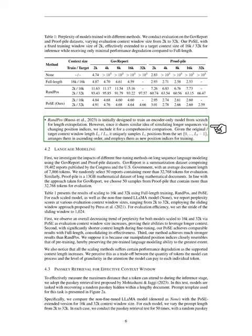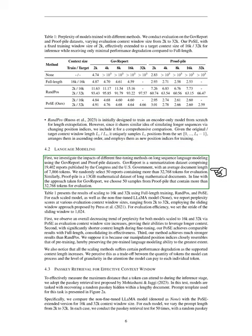In this section, we delve into the effects of various fine-tuning methods on long-sequence language modeling using two datasets: GovReport and Proof. The GovReport dataset is a collection of 19,402 reports from Congress and the U.S. government, with an average document length of 7,866 words. We randomly selected 50 reports containing more than 32,768 words for evaluation. Similarly, Proof is a large 13GB dataset of lengthy mathematical documents, and we also selected 50 samples with more than 32,768 words.